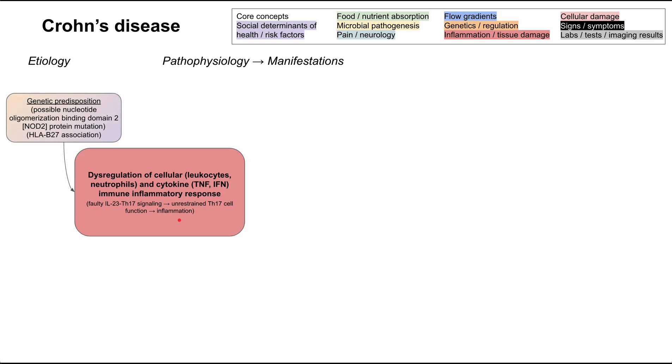First, there's a genetic predisposition to Crohn's disease in some people. It's thought to be the NOD2 protein mutation — that's nucleotide oligomerization binding domain 2 — and there is an HLA-B27 association. Because of this genetic predisposition, the disease tends to aggregate in families. It doesn't follow a strict hereditary pattern, but people in the same families tend to have Crohn's disease.